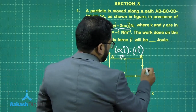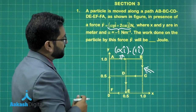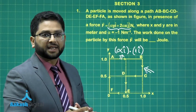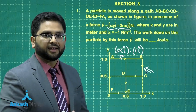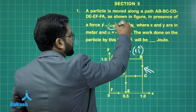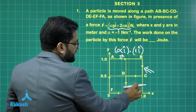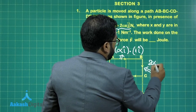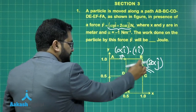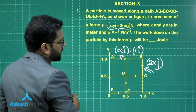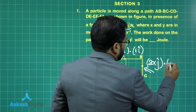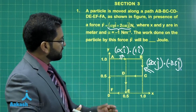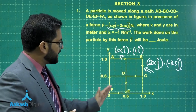For the BC segment, I require the ĵ component of the force because displacement is along y. The ĵ component of the force is 2α·x ĵ, and throughout BC, x equals one. So the force responsible equals 2α ĵ. The displacement is minus 0.5 ĵ. Similarly, you can proceed with segments CD, DE, EF, and FA — the pattern is exactly the same.